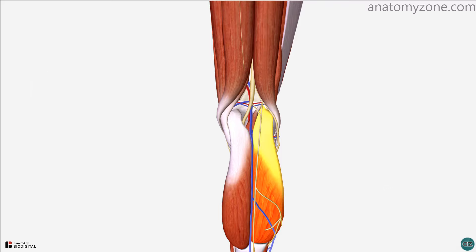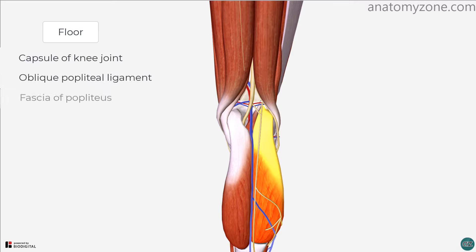In terms of the floor, it's comprised of the capsule of the knee joint and the oblique popliteal ligament, as well as the fascia of the popliteal muscle and the popliteal surface of the femur.